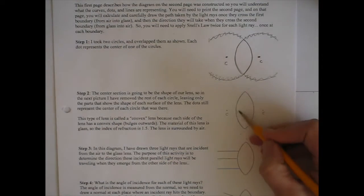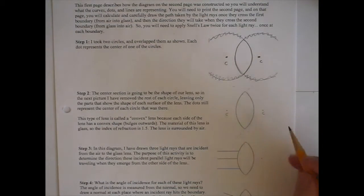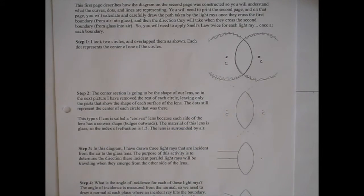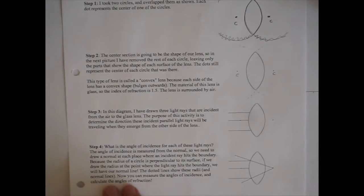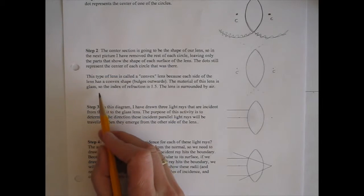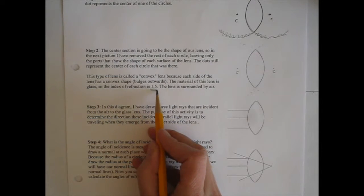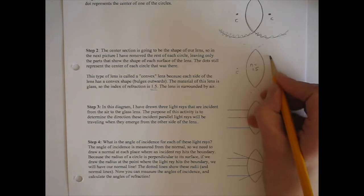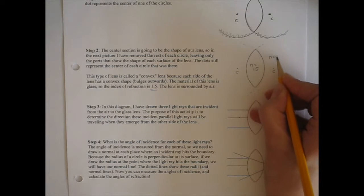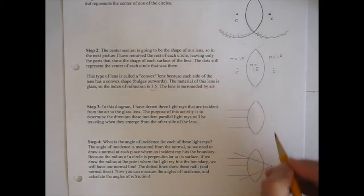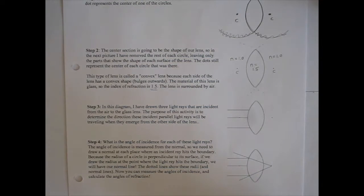This is going to be the shape of our lens — an aerial view of a slice of the lens. The material of this lens is glass, so the index of refraction is 1.5. So N for the inside of the lens is 1.5, and outside it's surrounded by air, so the index of refraction everywhere around the lens will be 1.0.